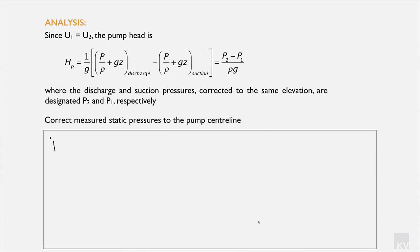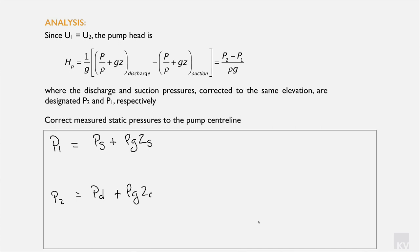To correct for elevation, we use: P1 = P_S + ρ × g × Z_S and P2 = P_D + ρ × g × Z_D. Performing these calculations, P1 works out to −36.03 × 10³ pascals and P2 works out to 238.82 × 10³ pascals.